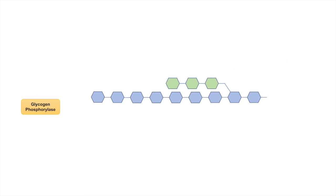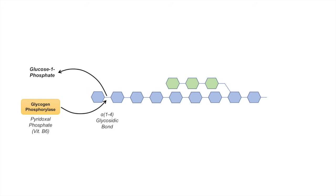Glycogenolysis begins with the enzyme glycogen phosphorylase. Glycogen phosphorylase is one of the many enzymes that require pyridoxal phosphate, which is a derivative of vitamin B6. What glycogen phosphorylase does is it targets a free end of glycogen by targeting an alpha-1,4 glycosidic bond, and in the process it releases a glucose-1-phosphate. Glycogen phosphorylase will keep removing glucose-1-phosphate from a branch, but a key characteristic is that it stops within four residues of a branch point due to size and steric hindrance of the enzyme.